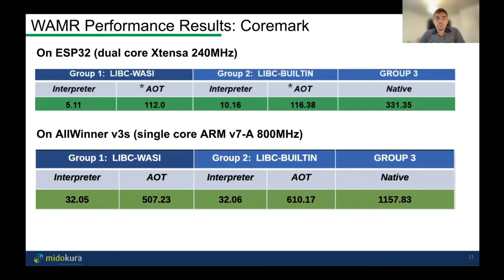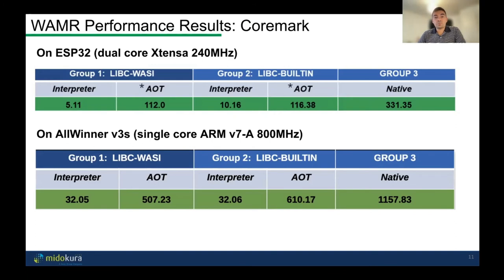We benchmarked using the CoreMark benchmark on the ESP32 — a dual-core Xtensa running at 240 MHz — and on an Allwinner V3S, a single-core 32-bit ARMv7A running at 800 MHz. The numbers are interesting: the AOT mode is far better than interpreted, as expected. On the ESP32, AOT mode is about one-third the speed of native code; on the Allwinner, about half. Overall this is pretty good — an acceptable level of overhead for our application, and we haven't done much to optimize it yet.